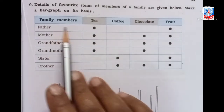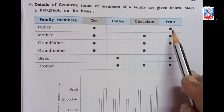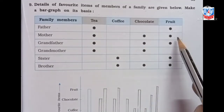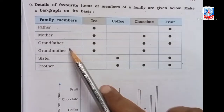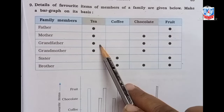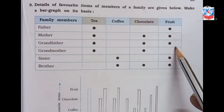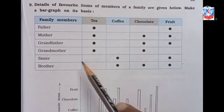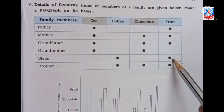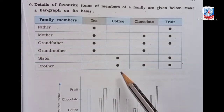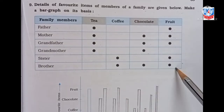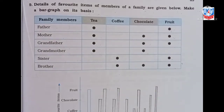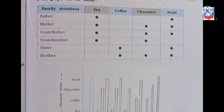Father likes tea and fruit. Mother likes tea, chocolate and fruit. Grandfather likes tea, chocolate and fruit. Grandmother likes tea and chocolate. Sister likes coffee and fruit. Brother likes coffee, chocolate and fruit. Now we have to draw a bar graph.